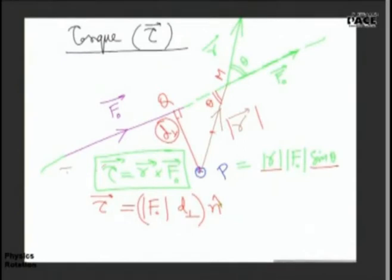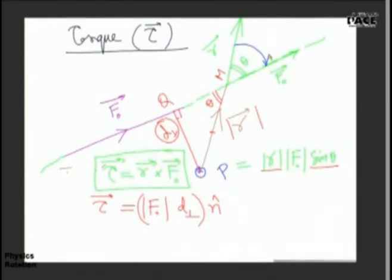Can anyone tell me the direction of R cross F? It is perpendicular to both R and F. You hold the R vector and rotate it through the smaller angle towards the F vector. By the right-hand screw rule, R cross F will be perpendicular to the plane — and in this case the direction comes out to be into the plane of the board. This is the direction of N-cap.